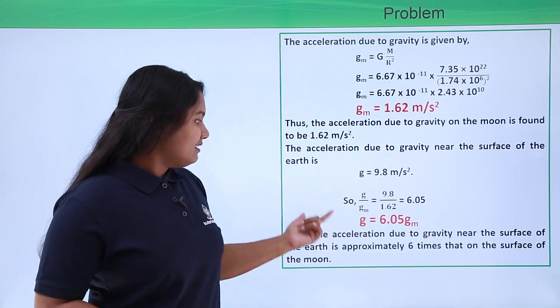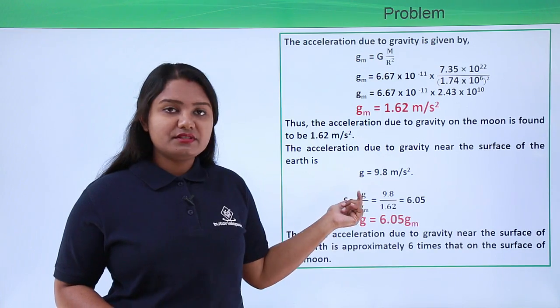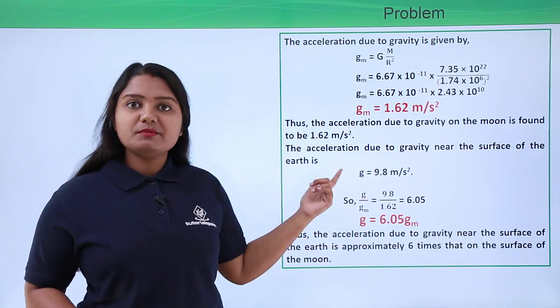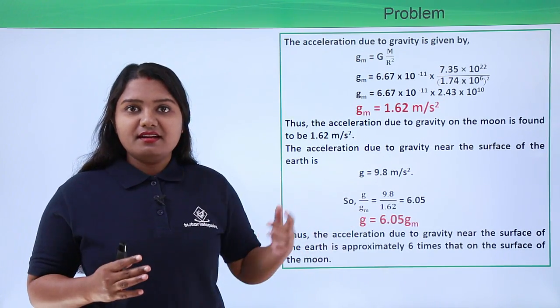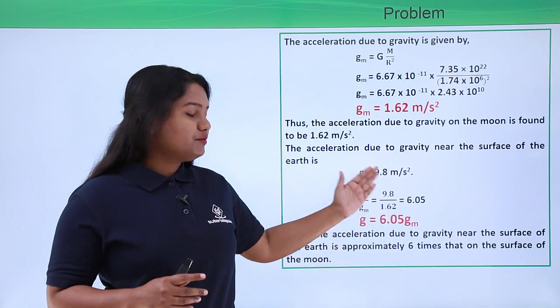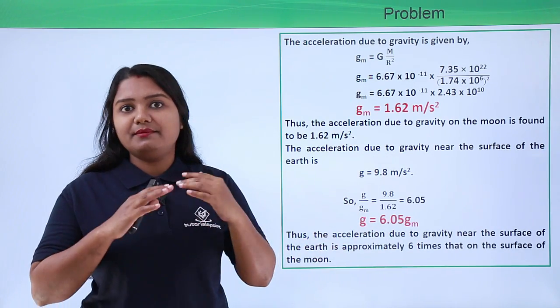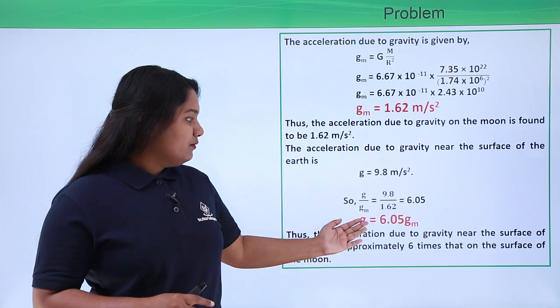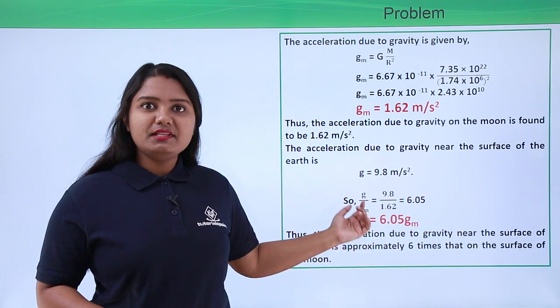So we have g equals 6.05 into gₘ. So we find from this expression that the acceleration due to gravity near the surface of the earth is approximately six times greater than that of the acceleration due to gravity on the surface of the moon.